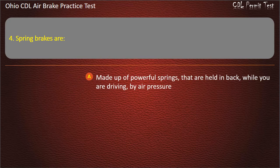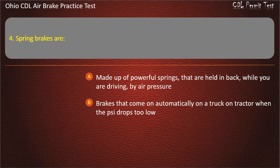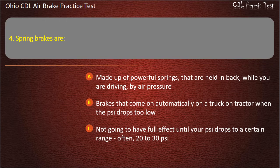Question 4: Spring brakes are: made up of powerful springs that are held back while you are driving by air pressure; brakes that come on automatically on a truck or tractor when the air pressure drops too low; not going to have full effect until your air pressure drops to a certain range, often 20 to 30 pounds per square inch; all of the above. Answer: All of the above.